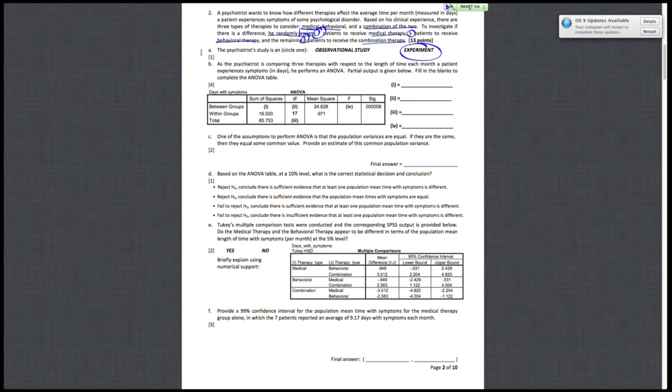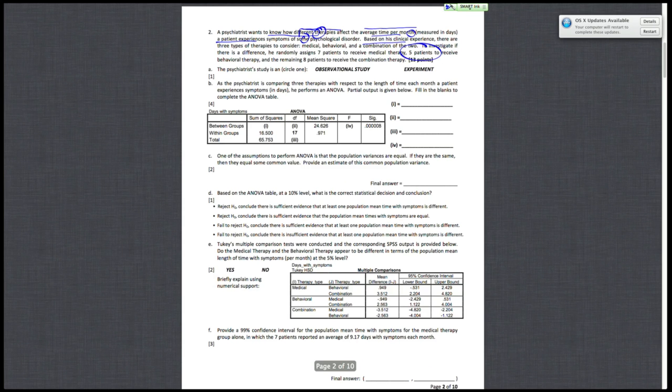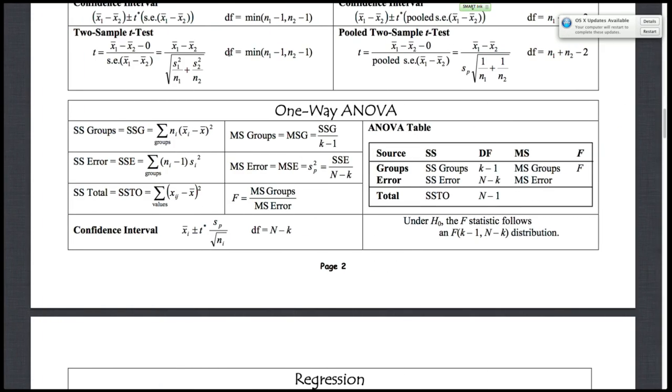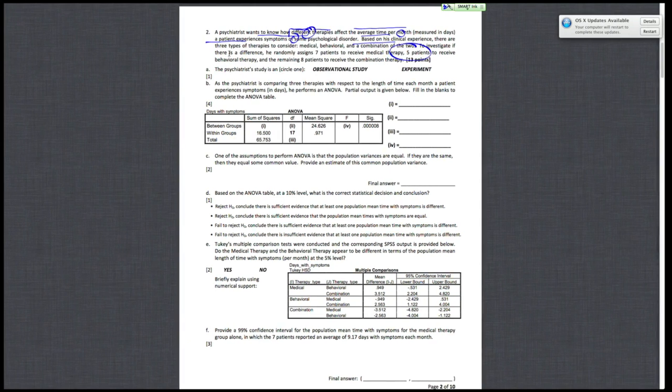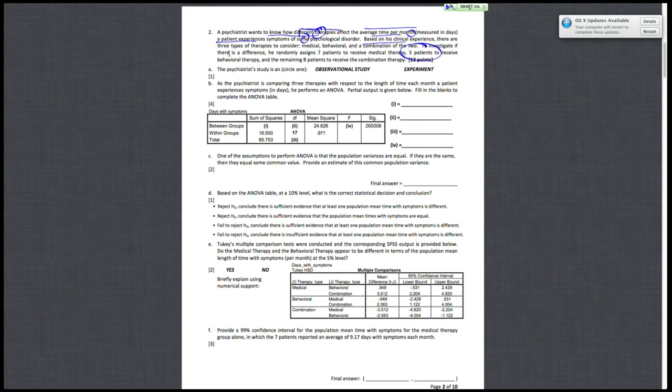Letter B asks: as the psychiatrist is comparing the three therapies with respect to the length of time each month a patient experiences symptoms, he does an ANOVA. Part of the output is given below, and we're tasked with filling in the blanks. So first we have letter I, which is the sum of squares. I've pulled up here our formula card, yellow formula card, I think, for ANOVA.